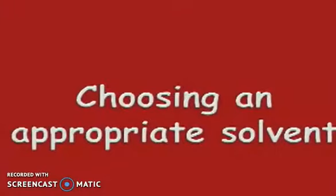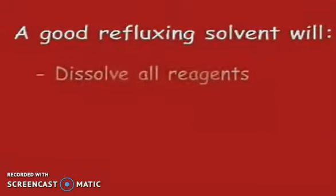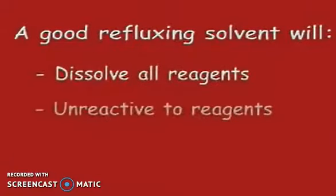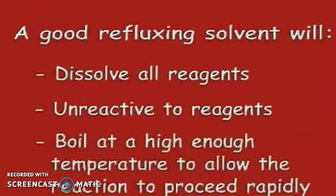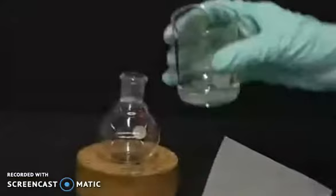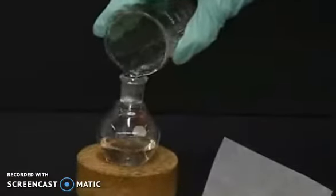Choose an appropriate solvent. First step: a good refluxing solvent will dissolve all reagents but not react with them unreactive reagents, and it will allow the reaction to proceed rapidly. After choosing solvent, put all of the reagents in the round bottom flask.